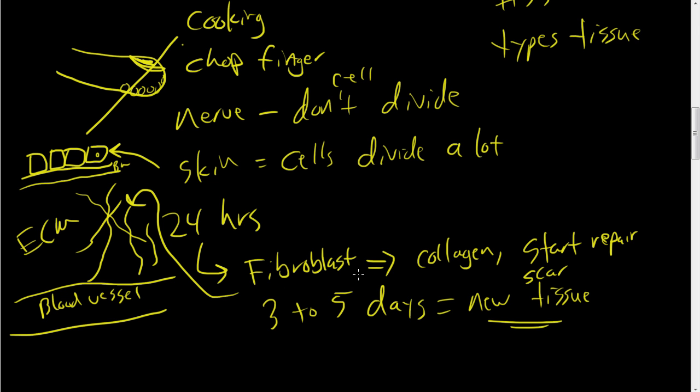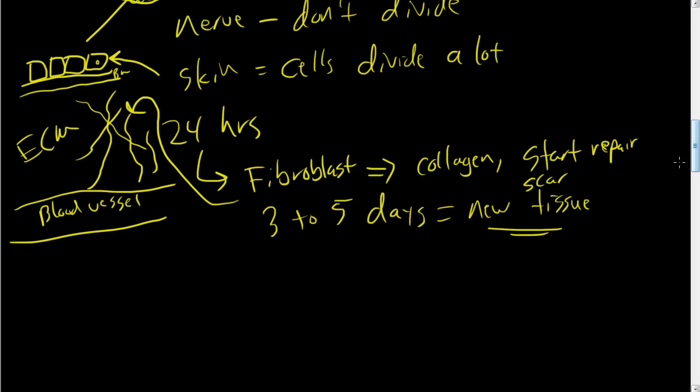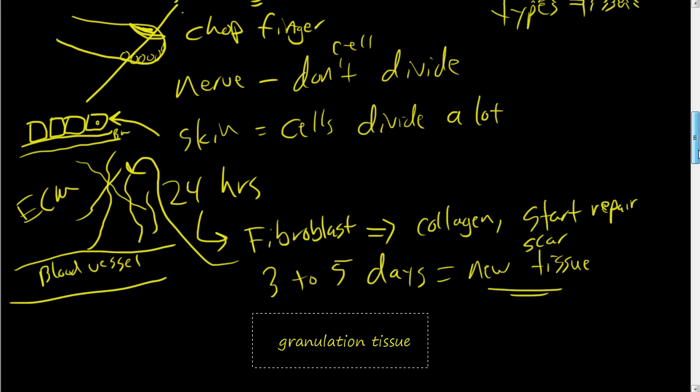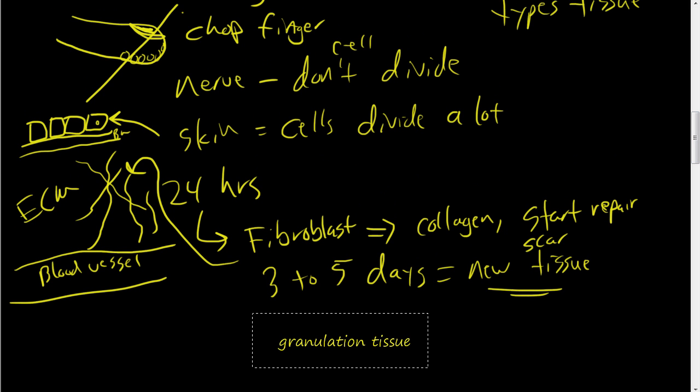So in three to five days, you're going to start to see this new tissue type, and this is called granulation tissue. In the case of this finger here, there's going to start to be this pinkish tissue. If you've ever had a scab or something, and around the scab, there's going to be this pinkish tissue.